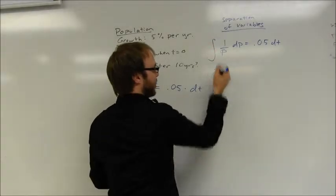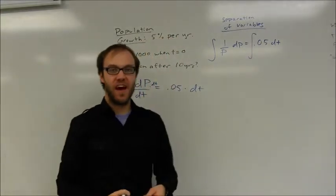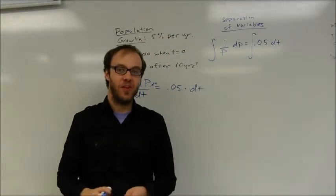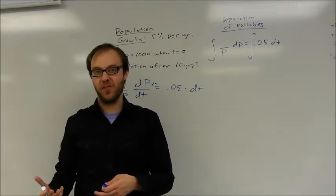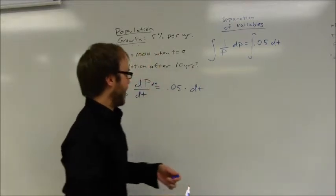So I'm going to take the integral of both sides here. I'll take the integral of 1 over p dp and set that equal to the integral of 0.05 dt. If those two expressions are equal, their integrals should both be equal to each other as well.